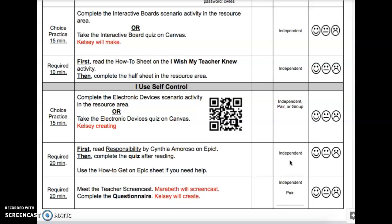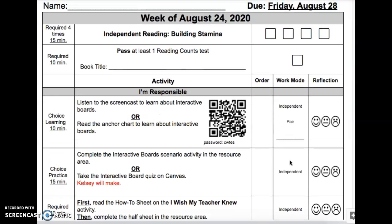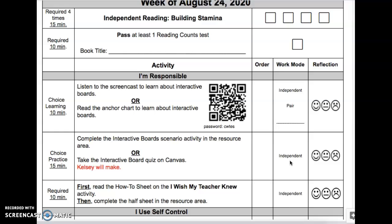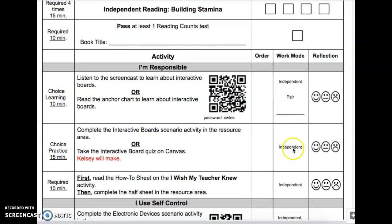One thing you'll recognize is the same on our activity list that you did last year, and we want to make sure that you're continuing to do this, is after each activity, we want you to reflect. It's always good to reflect and let us know how the activity went for you, but you need to be honest about it. If you finish an activity and you felt like you got it, you understood it, it was a great activity, you felt like you were successful, you didn't need help, you can give it a smiley face.